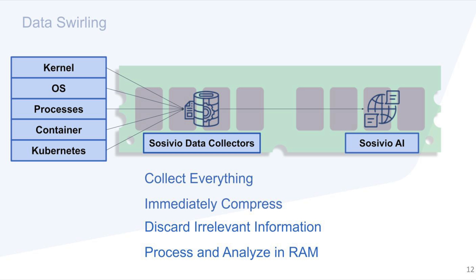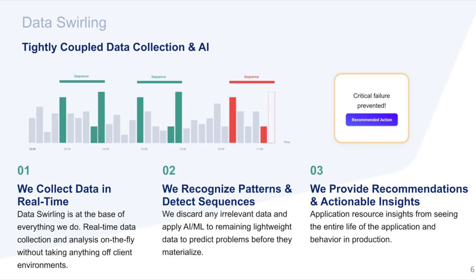There are several advantages to using data swirling. First, data is collected from every layer of the stack and immediately compressed — all irrelevant data is discarded, removing any burdensome storage requirements. Second, data is processed and analyzed in memory, removing the added delays of sending and receiving data to and from disk. Third, because data is lightweight, we can analyze a mass amount of data without being a burden on resources. All of these advantages allow us to see events as they unfold in real time and actually be predictive about events before they materialize into a failure. Data swirling fuels Sasevio's machine learning prediction engine and alerts users of impending issues before they materialize into catastrophes, and also fuels Sasevio's application profiling capabilities, ensuring applications are profiled with very accurate real-time data.